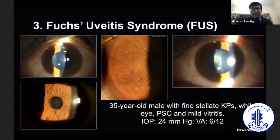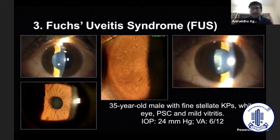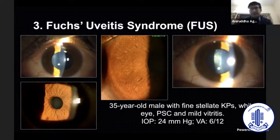The third phenotype is Fuchs uveitis syndrome, also called Fuchs heterochromic uveitis, in which you have a middle-aged patient with fine stellate KPs and posterior subcapsular cataract. More often than we know, these patients have a lot of vitritis. Because of the posterior subcapsular cataract, they have a decrease in visual acuity to 6/24, and almost 50% of these patients have glaucoma.